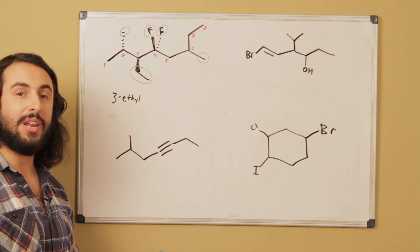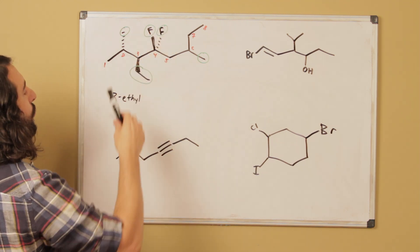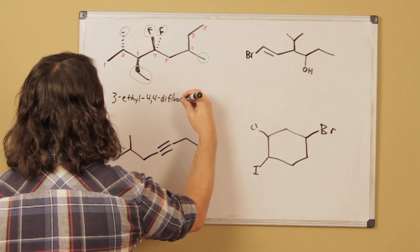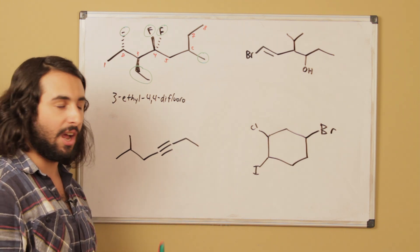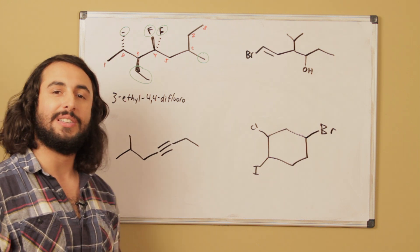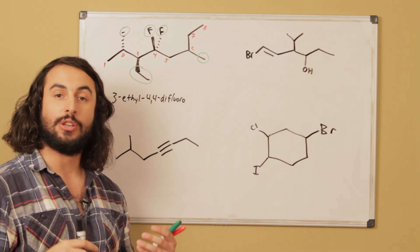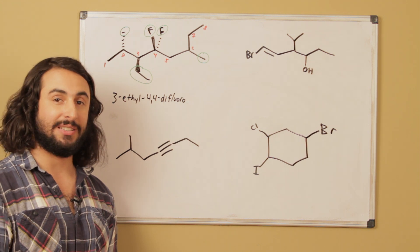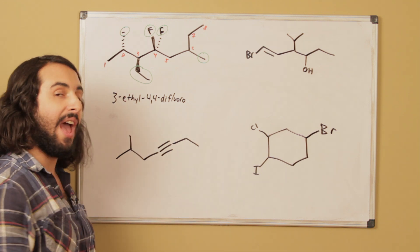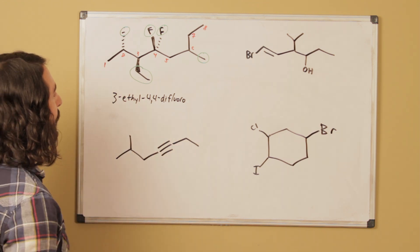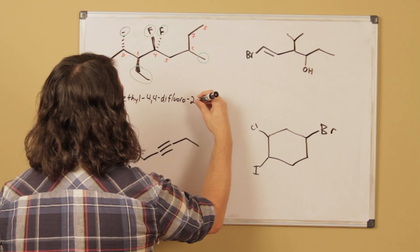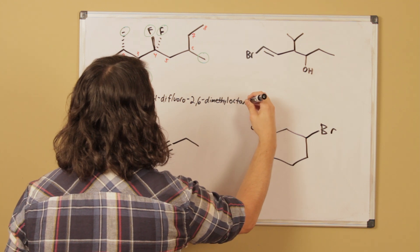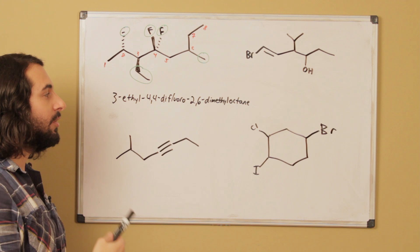We list the substituents alphabetically. First alphabetically is ethyl — on carbon three we have an ethyl, so that's 3-ethyl. On carbon four we have two fluoros, so that is 4,4-difluoro. We do have to list both positions even if they're on the same atom so there is no ambiguity. We disregard the prefixes in terms of alphabeticity, so difluoro still comes after ethyl because it's F for fluoro, not D for difluoro. So: E for ethyl, F for fluoro, and then we have 2,6-dimethyl.